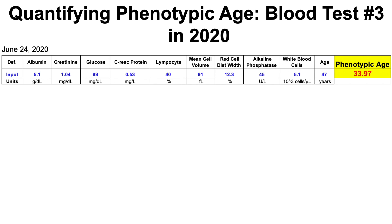Looking at the results: I had high levels of albumin, which are associated with biological youth — good news. Higher than expected creatinine — bad news. Higher than expected glucose — also bad news. Higher than average C-reactive protein. Stellar levels of lymphocyte percentage. Pretty good mean red blood cell volume and red cell distribution width, with biological youth values for alkaline phosphatase, and higher than average white blood cells — my average is about 4.5.